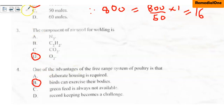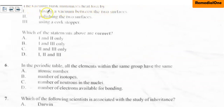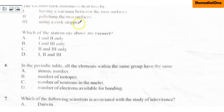Question five: the vacuum flask minimizes heat loss by I. having a vacuum between the two surfaces, II. polishing the two surfaces, III. using a cork stopper. The vacuum between the surfaces prevents heat loss by radiation. Polishing the two surfaces also prevents heat loss by radiation. Using a cork stopper prevents heat loss by conduction. So all of them are correct. The correct option is D — all the options are correct.